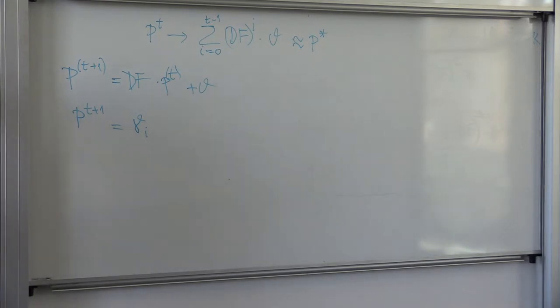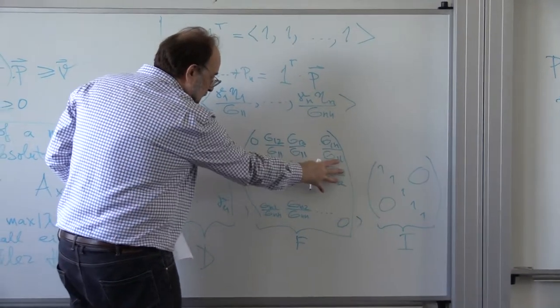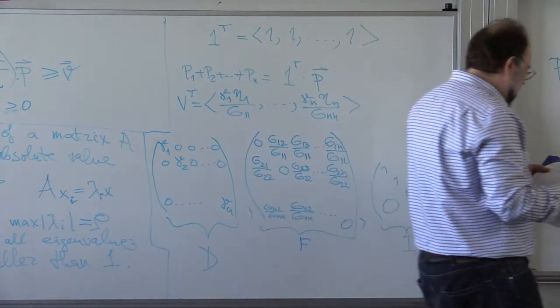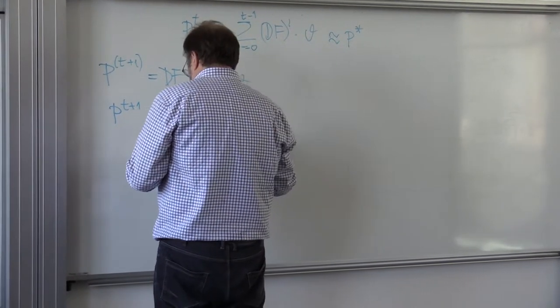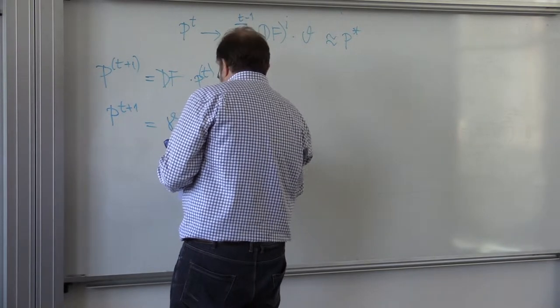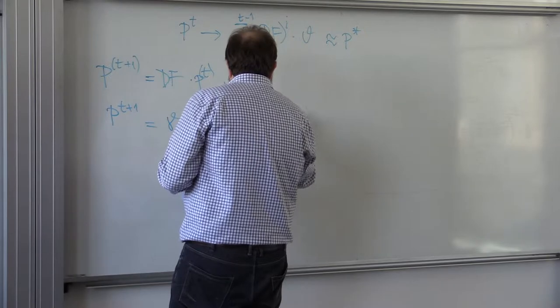Remember where is the matrix DF, here it is, D times F, the product of these matrices. First I multiply by this, and then the results by gamma, so the upshot is gamma I times sum I is not equal to J, Gij divided by Gii times P iteration T.